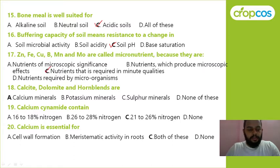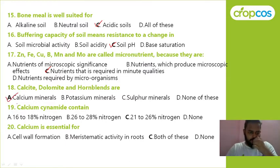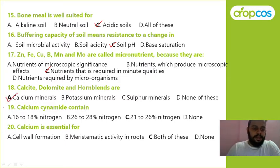Calcite, dolomite, and hornblende are calcium minerals, potassium minerals, sulfur minerals, or none? The correct answer is calcium minerals. Calcium cyanamide content: the options include 16 to 18 percent, but the correct answer is 21 percent.